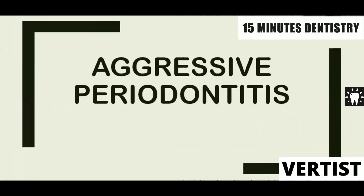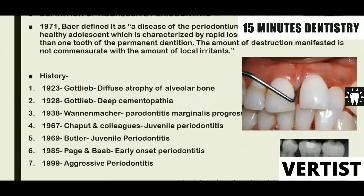A rare form of periodontitis is aggressive periodontitis. Payer in 1971 defined it as a disease of the periodontium occurring in an otherwise healthy adolescent, characterized by rapid loss of alveolar bone involving more than one tooth of the permanent dentition. The amount of destruction does not commensurate with the amount of local irritants.